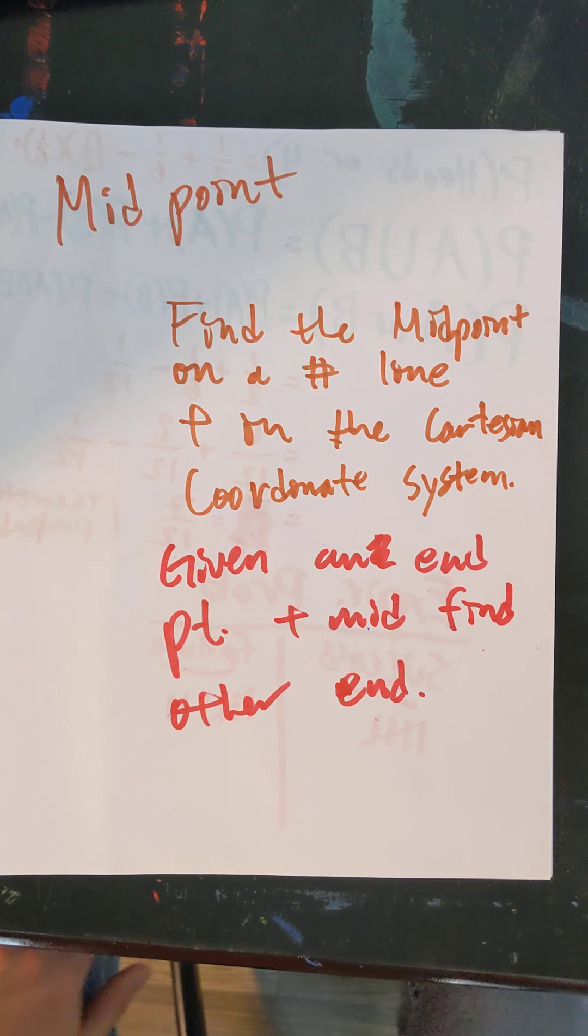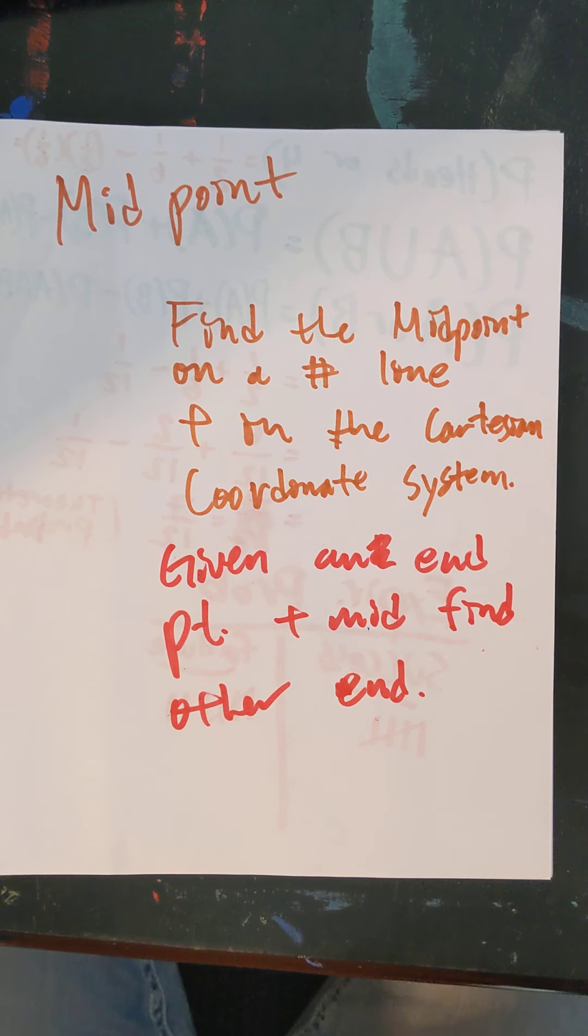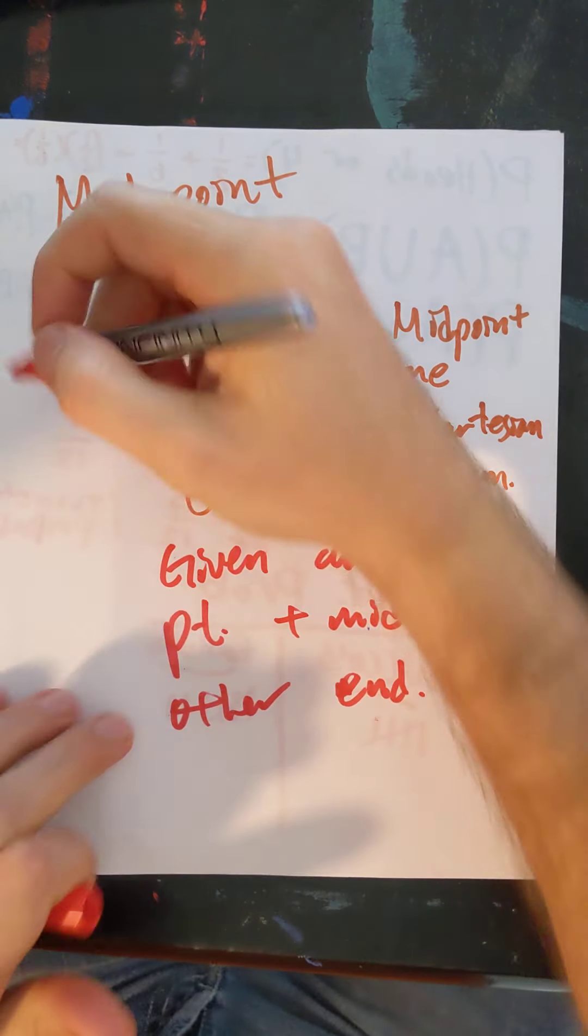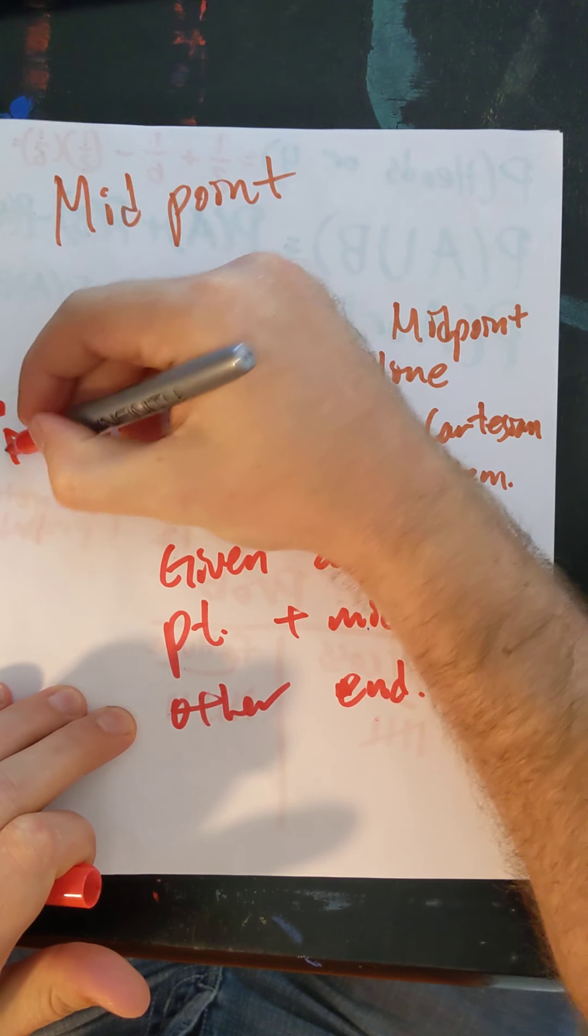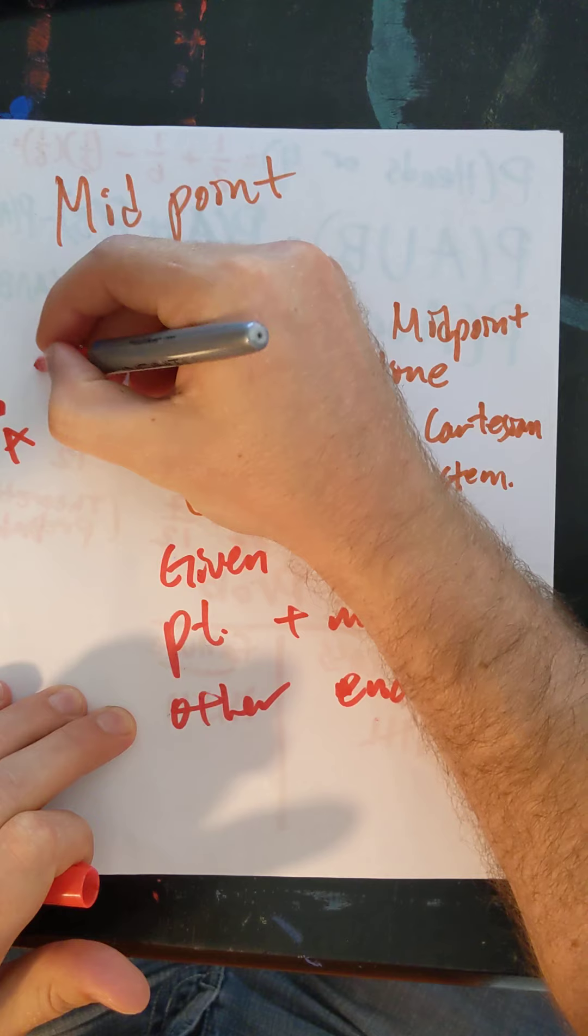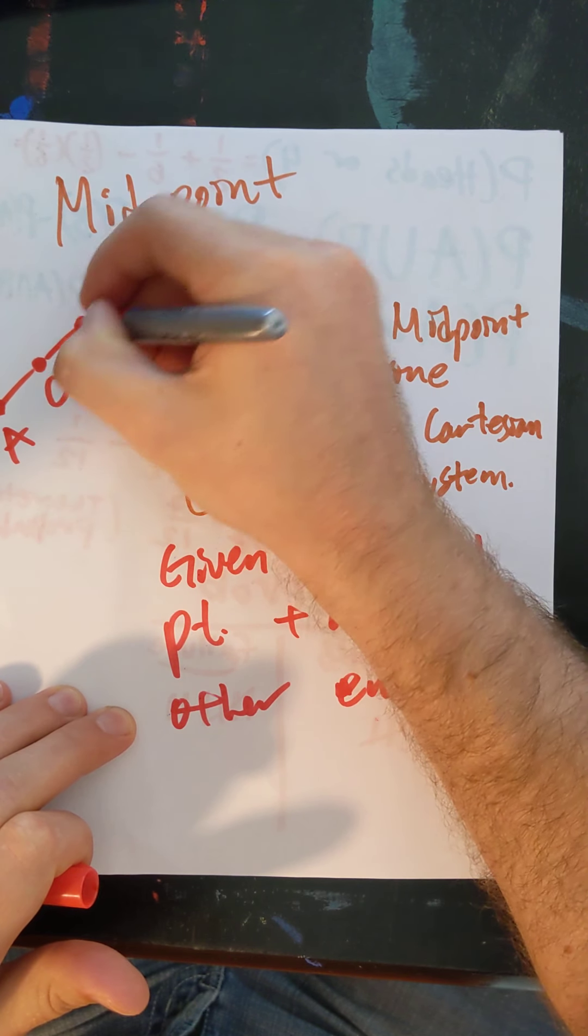All right, let's talk about midpoint. As with all things in math, it was creatively named. So midpoint is the point in the middle of two other points. So let's say if I have a point A and I have a point B, then the point in the middle, C, is the midpoint.